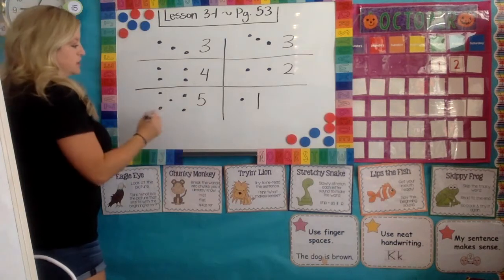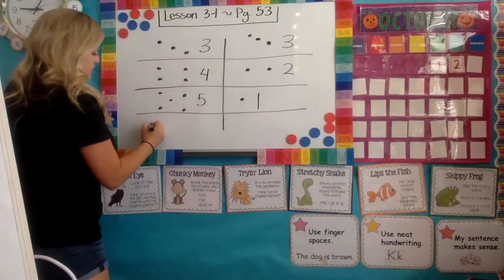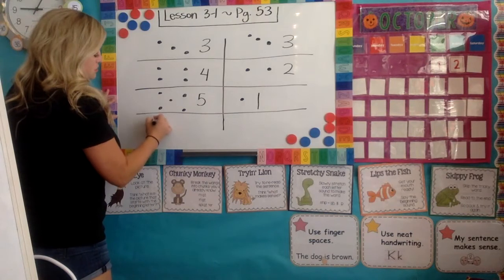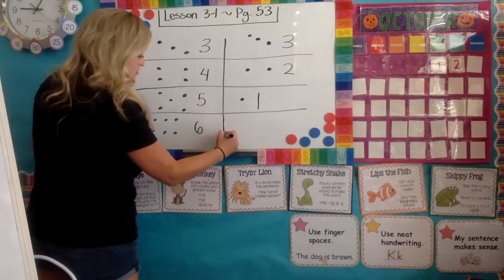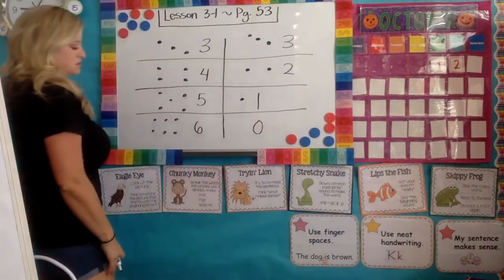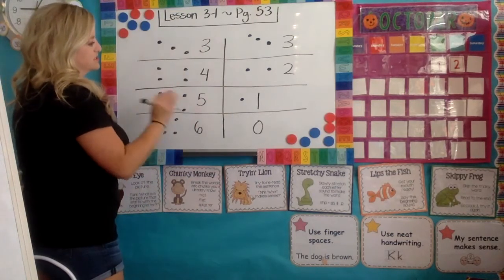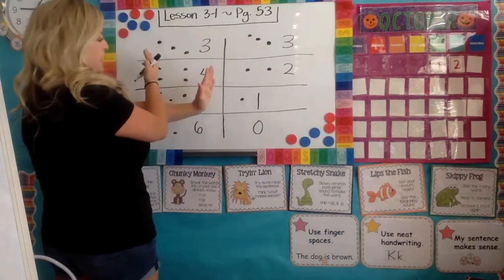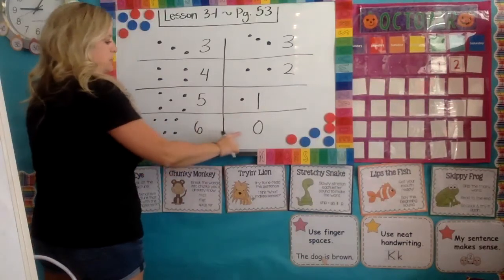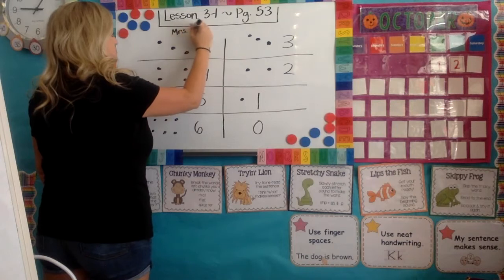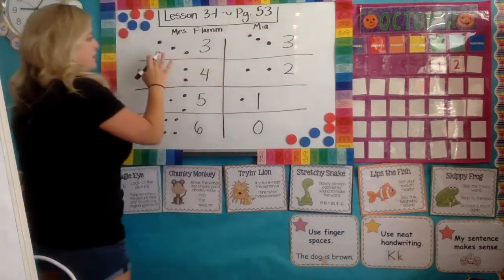Now I can do it the other way too. I'm going to take this last dot and bring it over here. One, two, three, four, five, and six — I know this is six. Over here I have zero dots. So six plus zero. These are all the ways you can add together to get six. If I flip them, I could also get two plus four, one plus five, zero plus six.